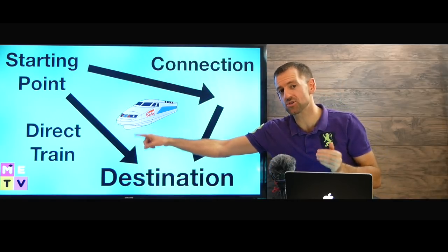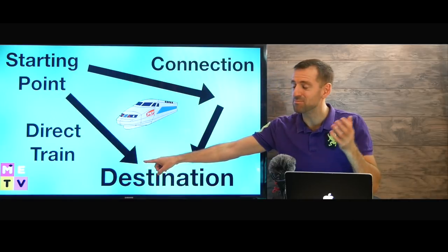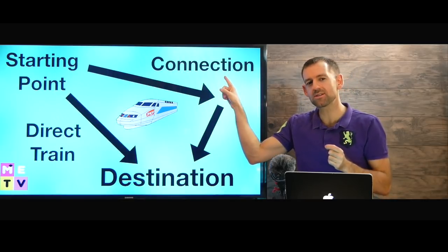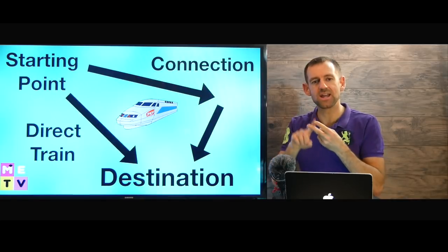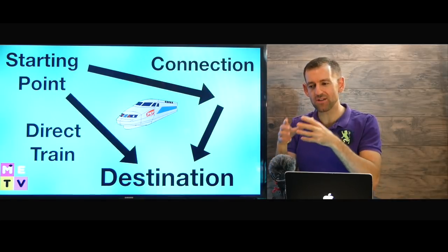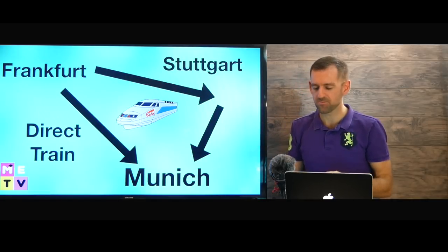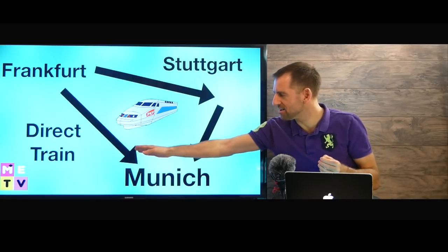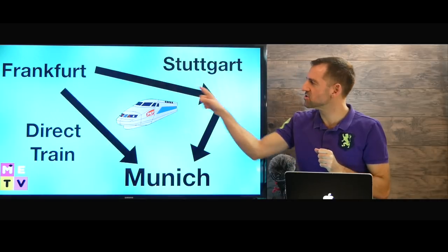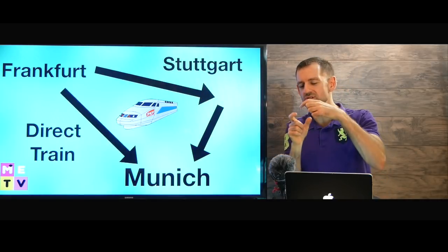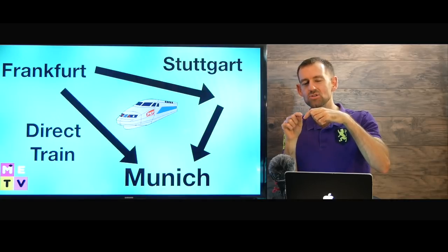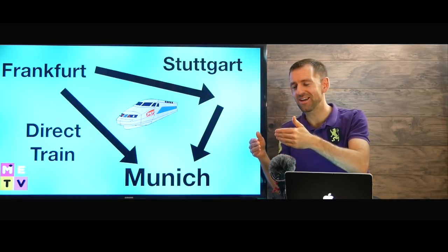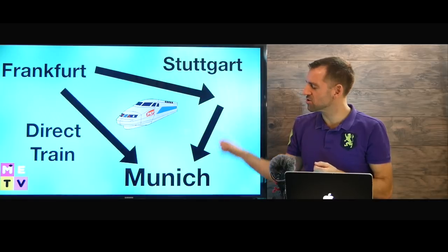You might be able to take a direct train to your destination, but you might have to make a connection. That means you have to change trains somewhere. For example, if we're going from Frankfurt to Munich, there might be a direct train, but we might have to connect in Stuttgart. So on your ticket it might say 'connect in Stuttgart' — you have to get off your train, change platforms, and then find the train going from Stuttgart to Munich.